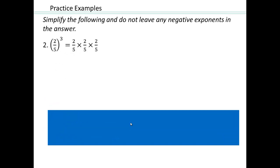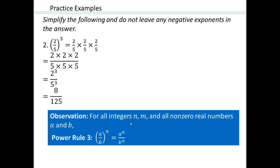Let's look at a practice example. 2 fifths to the power 3 is the same as 2 fifths times 2 fifths times 2 fifths. Now that we know how to multiply fractions, we multiply all the numerators and all the denominators, giving us 2 to the third over 5 to the third, or 8 over 125. In general, if you have a over b, b non-zero, to the power n, that's a to the power n over b to the power n.